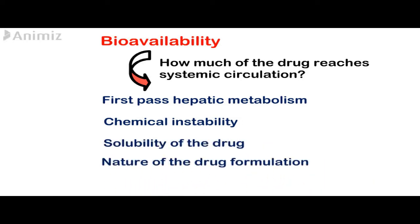Factors that affect bioavailability include first-pass hepatic metabolism, which is the elimination that occurs before the drug enters the systemic circulation and which decreases the effects of that drug. Chemical instability also affects bioavailability — some drugs such as penicillin G are unstable in the pH of the gastric contents, and will be destroyed before they enter systemic circulation.